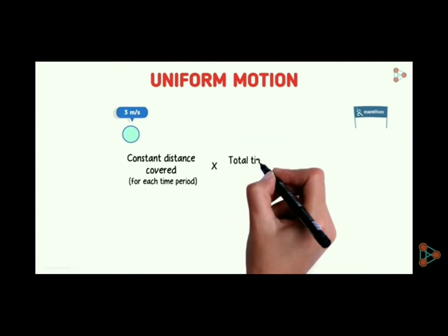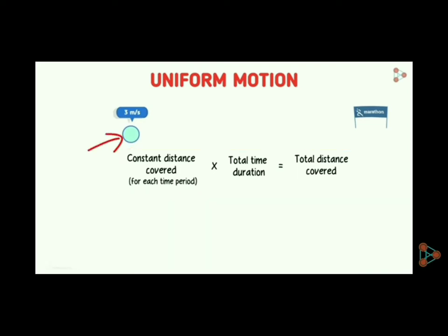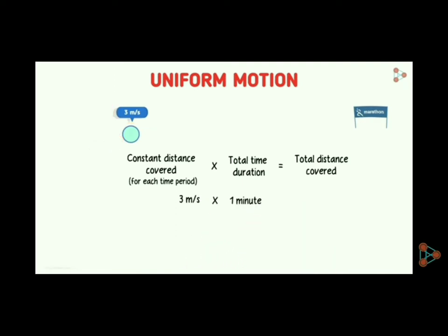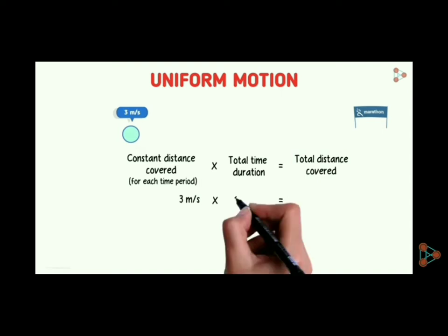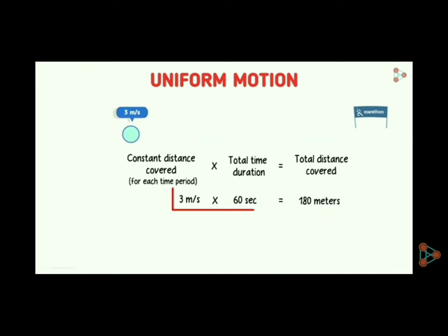The constant distance covered for each time period multiplied by the total time duration gives the total distance covered. The distance covered is three meters per second and the total time duration is one minute, so the total distance covered will be — try to find out — we can write one minute as 60 seconds, so the answer will be 180 meters. The unit will be meters, which you can verify from the left-hand side.